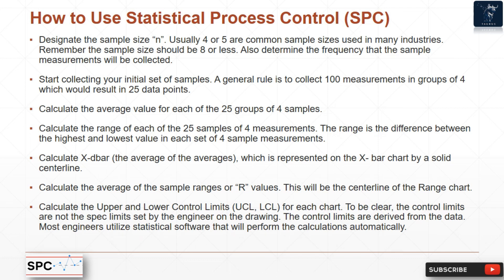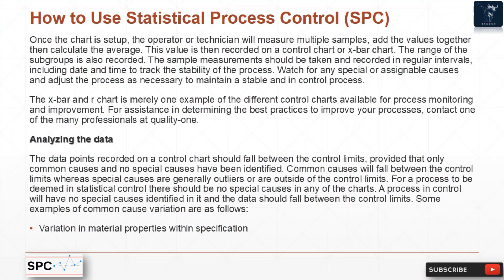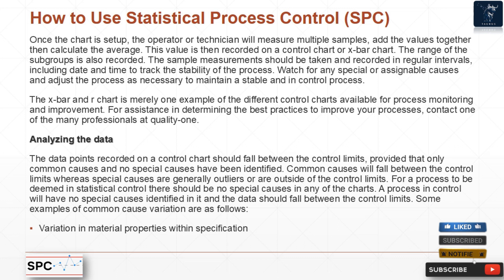To be clear, the control limits are not the specification limits set by the engineer on the drawing — the control limits are derived from the data itself. Most engineers utilize statistical software that performs these calculations automatically. Once the chart is set up, the operator or technician measures multiple samples, adds the values together, and calculates the average. This value is then recorded on the X-bar control chart, and the range of the subgroup is also recorded.